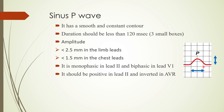The amplitude — from the baseline to the peak as shown by the arrow — should be less than 2.5 mm in the limb leads and less than 1.5 mm in the chest leads. Since one small box equals 1 mm, the P wave should not be more than 2.5 small boxes in height in the limb leads and less than 1.5 small boxes in the chest leads.